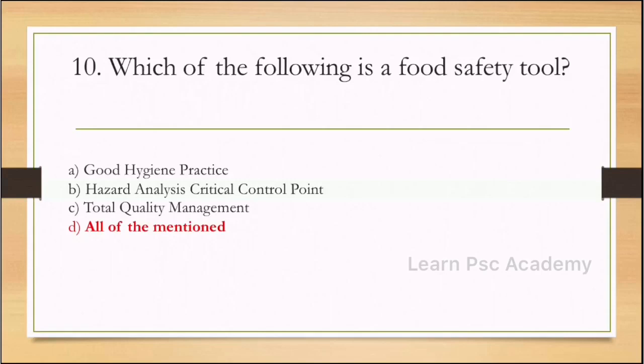Tenth question: which of the following is a food safety tool? Options: good hygiene practice, hazard analysis, critical control point, total quality management, all of the mentioned. Correct answer: all of the mentioned.